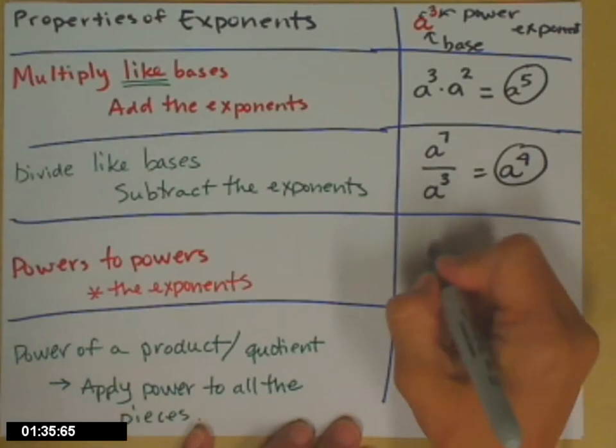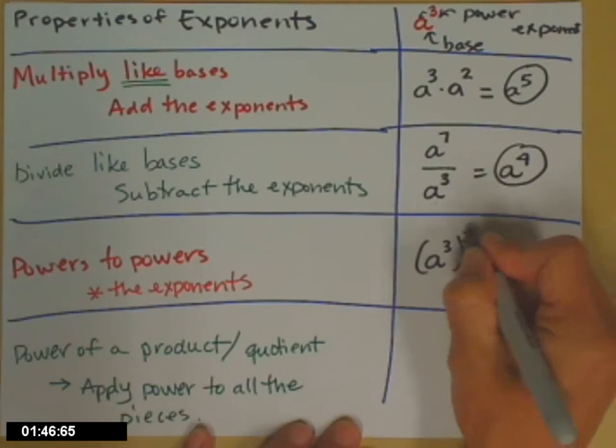Powers to powers. The square applies to the parentheses. What happens is I multiply the exponents. A to the 6th.